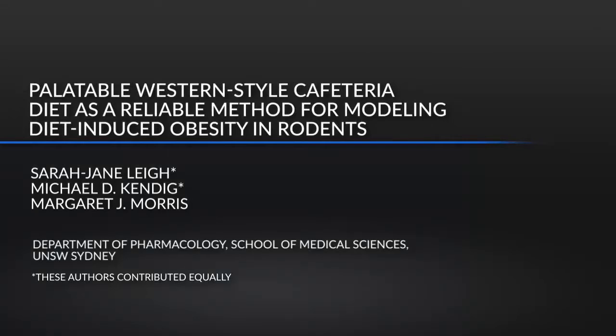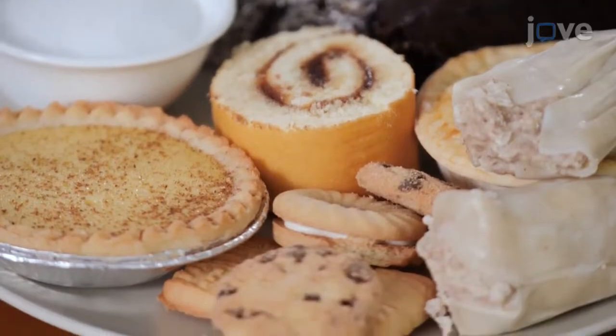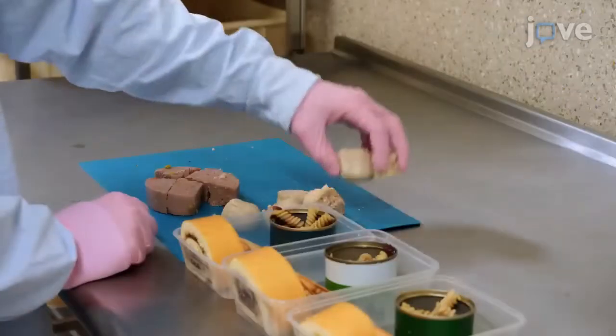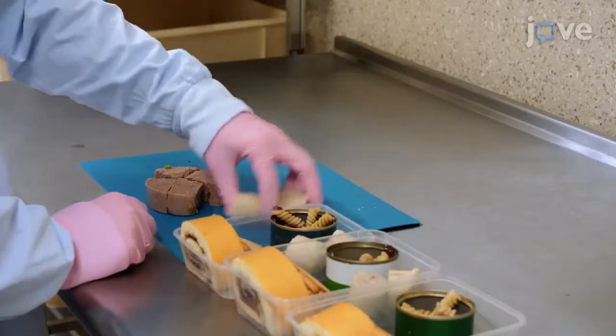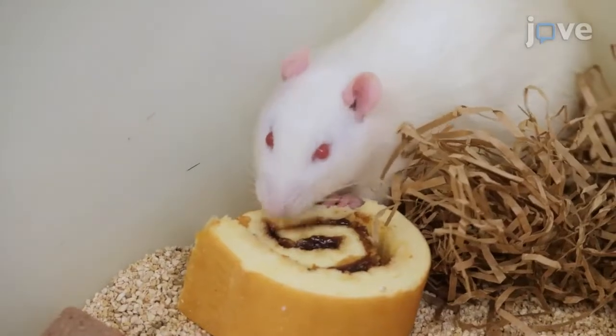This method aims to model overeating and subsequent obesity by providing access to a wide variety of palatable foods high in sugar and saturated fat. The variety and palatability of the diet ensures that overeating is reliably promoted, leading to substantial metabolic disturbance within weeks. Providing a cafeteria diet allows for the metabolic and neural changes associated with obesity to be examined in great detail.